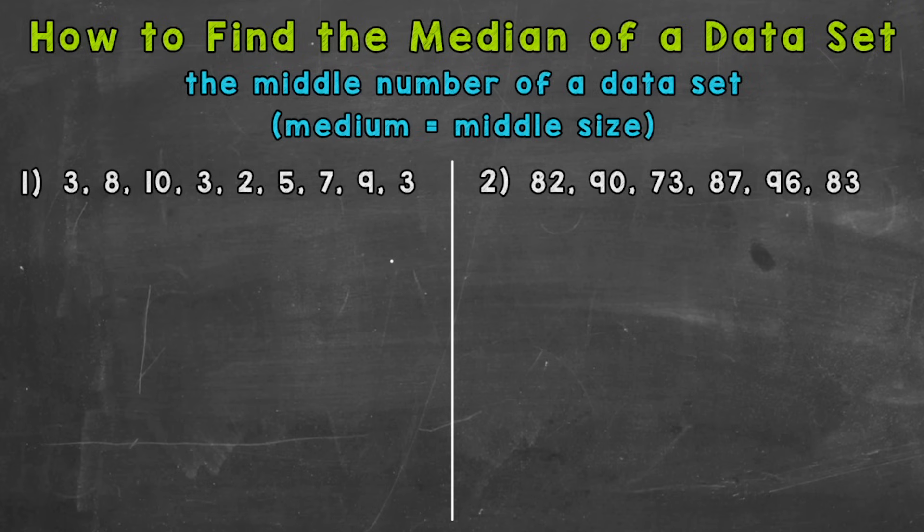The median is the middle number of a data set. And the way I remember it, I think of the word medium. It kind of sounds like median. And medium is the middle size, so I make the connection that median equals middle.